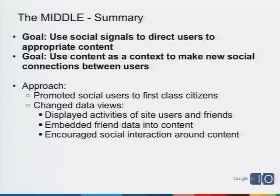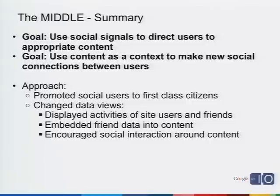To summarize the middle section: we used social signals to direct users to appropriate content, showed socially what content might be interesting, and allowed content to dictate relationships on our site — something Friend Connect is really great at. To do this, we made social users first-class citizens with their own UI and login buttons on the same level as normal login buttons. We changed data views to display activities of people working on your site, put friend data into content, and allowed a discussion to happen around the content so users can interact with each other.